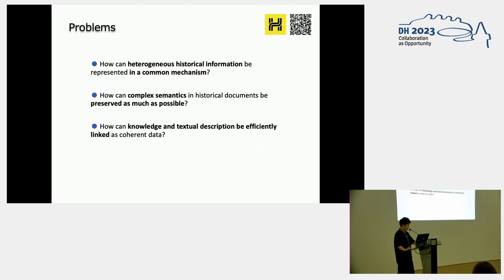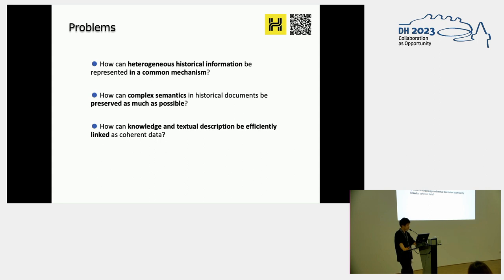So, what are the more specific problems? We'd like to point out three of them. First, how can heterogeneous information be represented in a common mechanism? And how can complex semantics in historical documents be preserved as much as possible? And how can knowledge and textual description be effectively linked as coherent data?